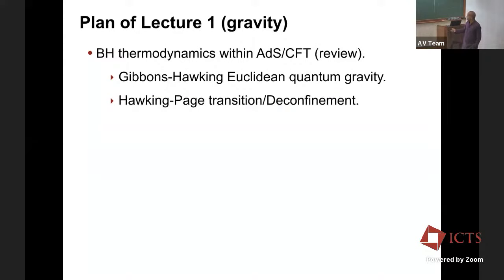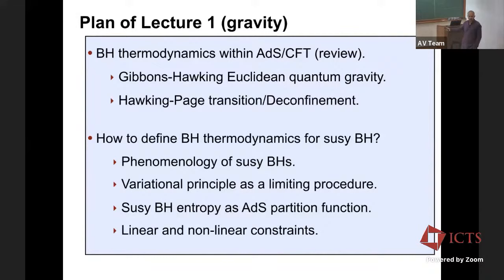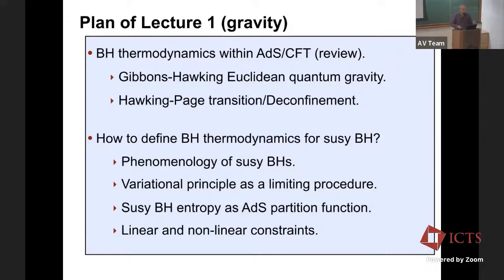Today, here's the plan of today's lecture. First I'll review just some classical black hole thermodynamics — if you've been attending advanced GR courses, it's just a basic review. But I just want to set up the formalism, discuss the Hawking-Page transition, and then try to apply that formalism to supersymmetric black holes. There are lots of subtleties. I'll first discuss what the black holes are, how to define the thermodynamics as some kind of a limiting procedure, and what's the relation to the partition function. And technically there's some interesting story about constraints that I'll discuss. If you have any questions...